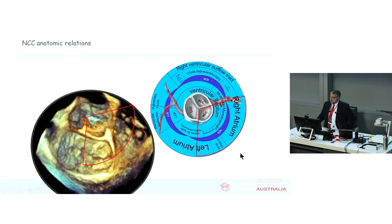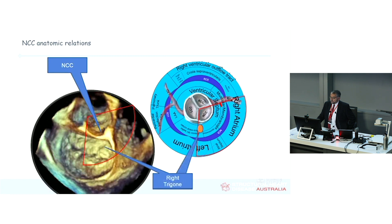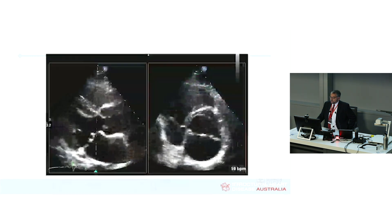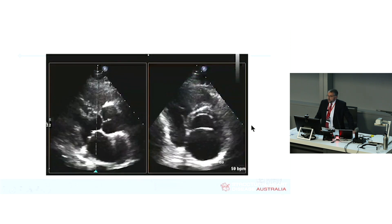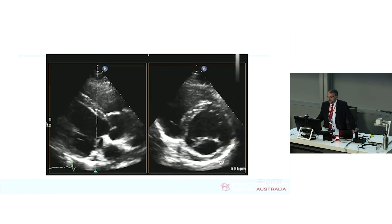The non-coronary cusp is associated with the atrial septum, but also with the medial end of the mitral valve, the trigone, the AV node, and the aorticomitral curtain. Let's now look at how this translates to transthoracic echo.